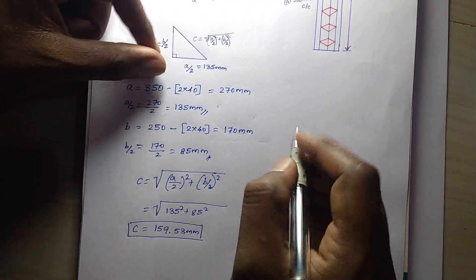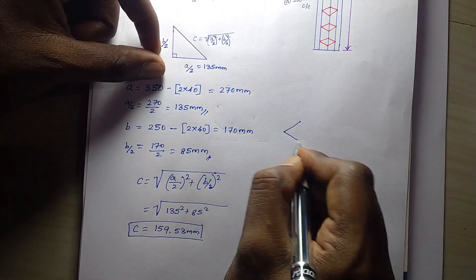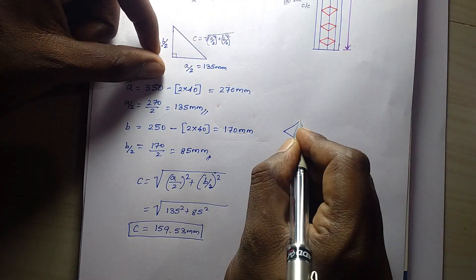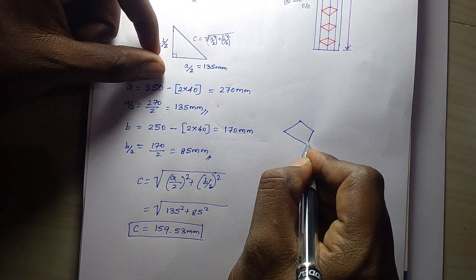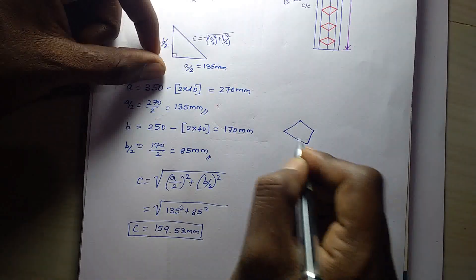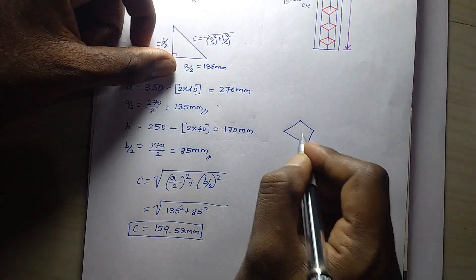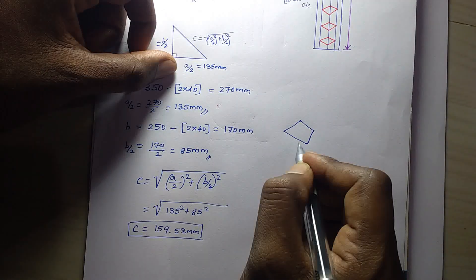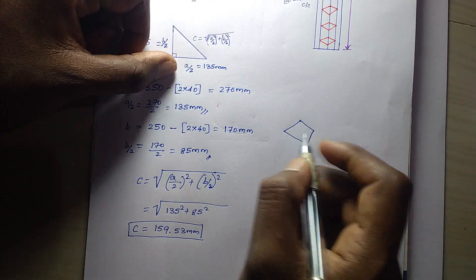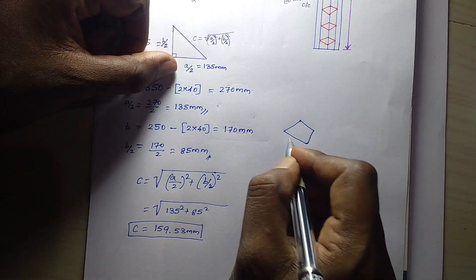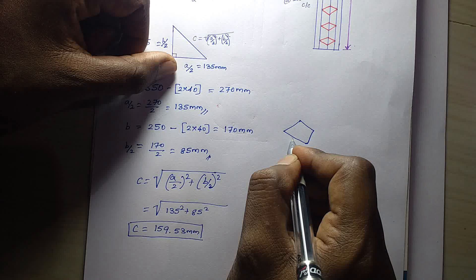Now we have to write this diamond shape. Please consider this diamond — if we consider one side length.